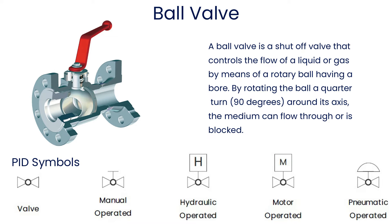A ball valve is a shutoff valve that controls the flow of a liquid or gas by means of a rotary ball having a bore. By rotating the ball a quarter turn, 90 degrees, around its axis, the medium can flow through or is blocked.